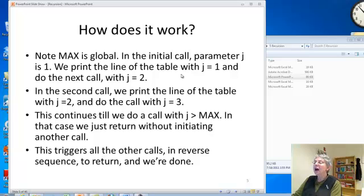This is going over the same thing. We start with j equal 1 and print the line for multiplying by 1. Then we do the next call with j equal 2. Then we do j equal 3 and so on until we get up to a value of j bigger than max. And in that case, we just return.